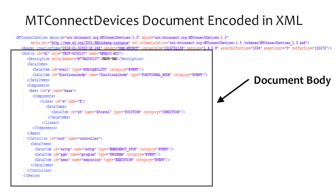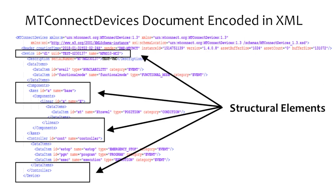Both data models utilize two types of XML elements to describe the organized information: structural elements and data entities. Structural elements define the physical and logical parts and sub-parts used to describe a piece of equipment. Higher-level structural elements describe major functions like the machine controller, each of the axes, the enclosure, and safety equipment. Lower-level structural elements describe smaller sub-parts such as motors, valves, tanks, or a door.